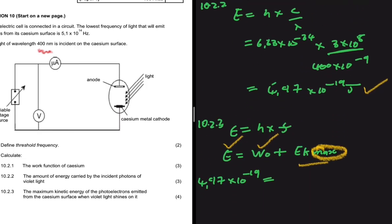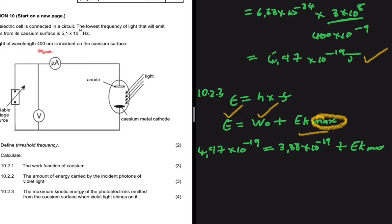This equals the work function, which is 3.38 times 10 to the minus 19, plus Ek max. We move that term to the left-hand side. Subtracting 3.38 times 10 to the minus 19 from 4.97 times 10 to the minus 19 gives us Ek max equals 1.59 times 10 to the minus 19 joules. That is the maximum kinetic energy of the electrons emitted from the cesium metal surface when violet light is incident.